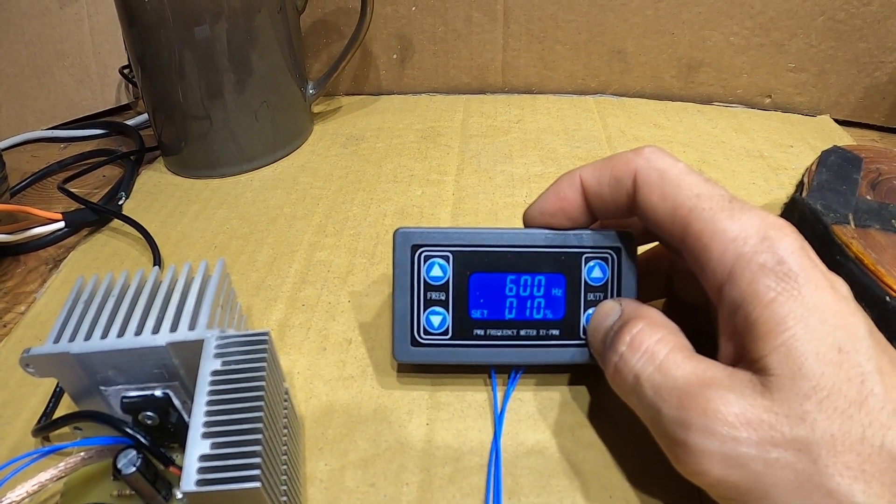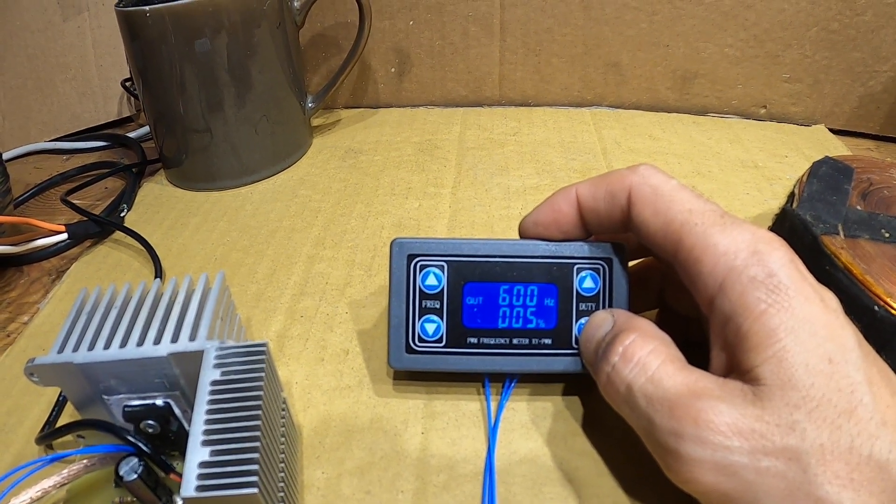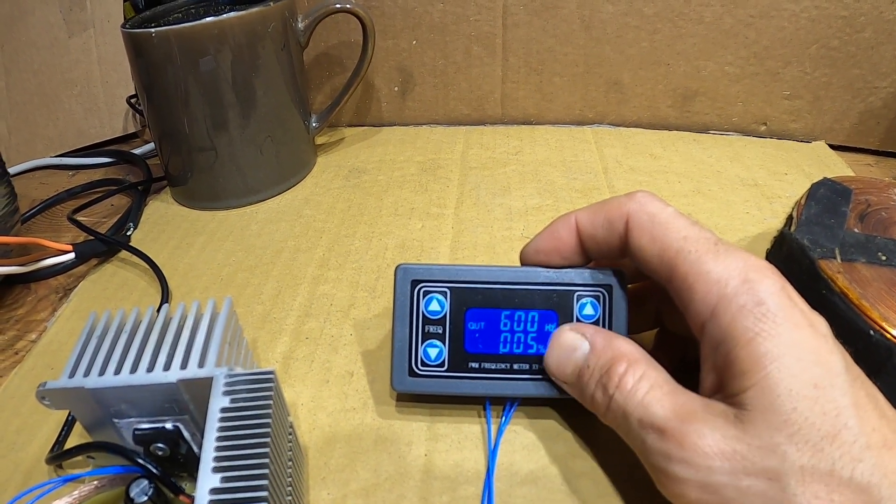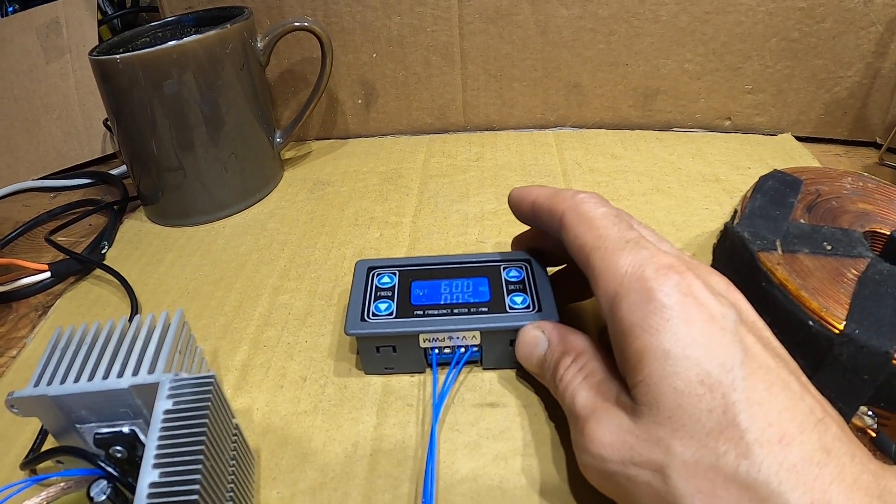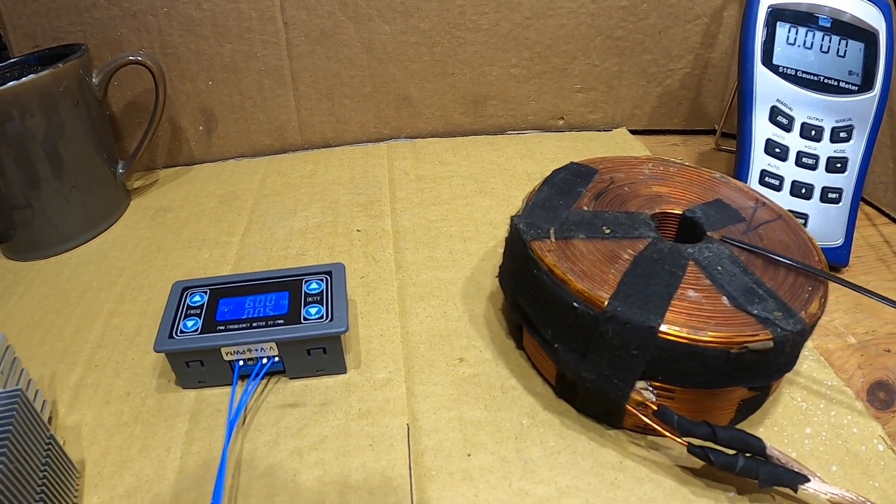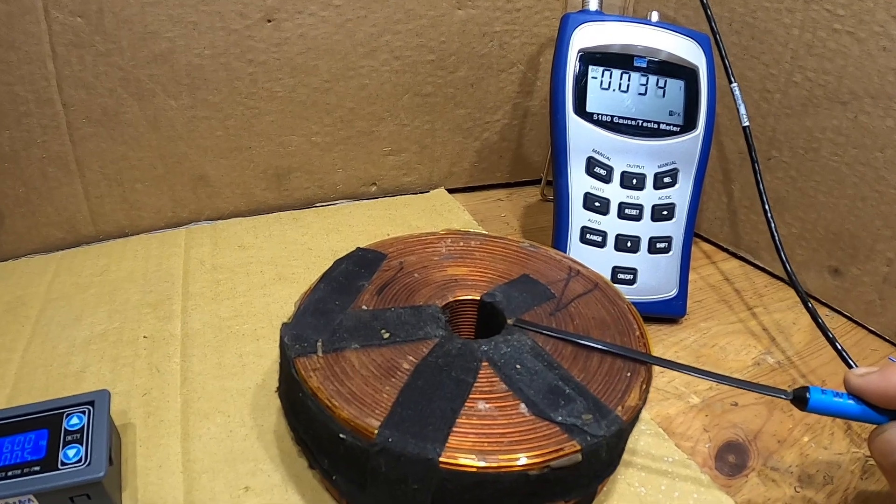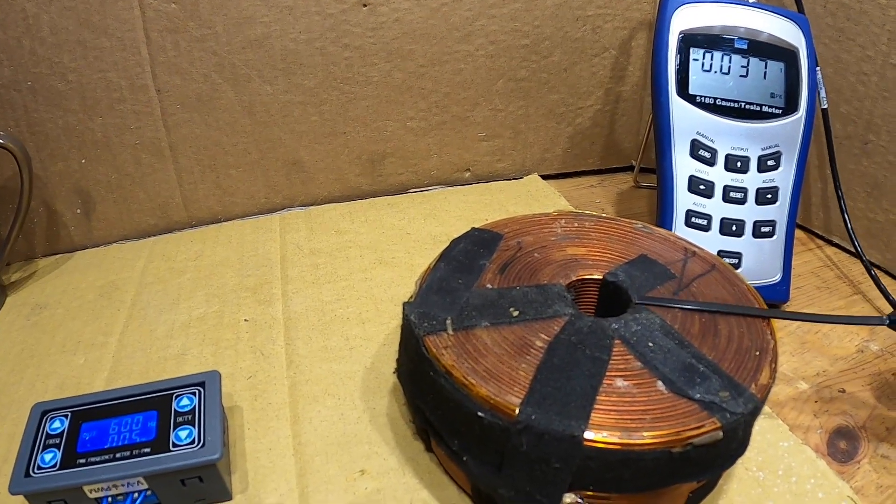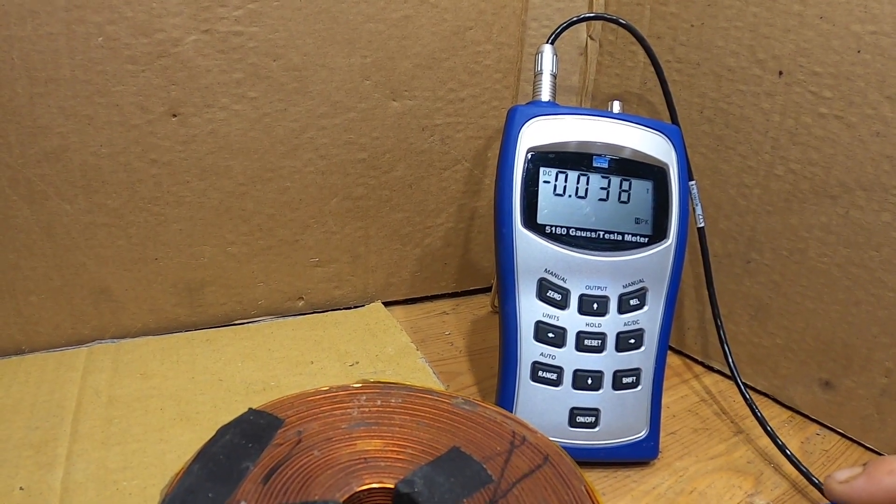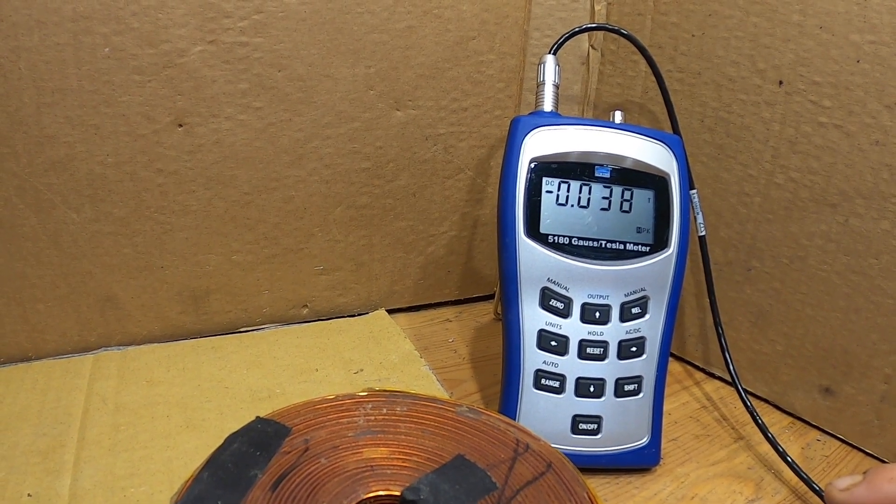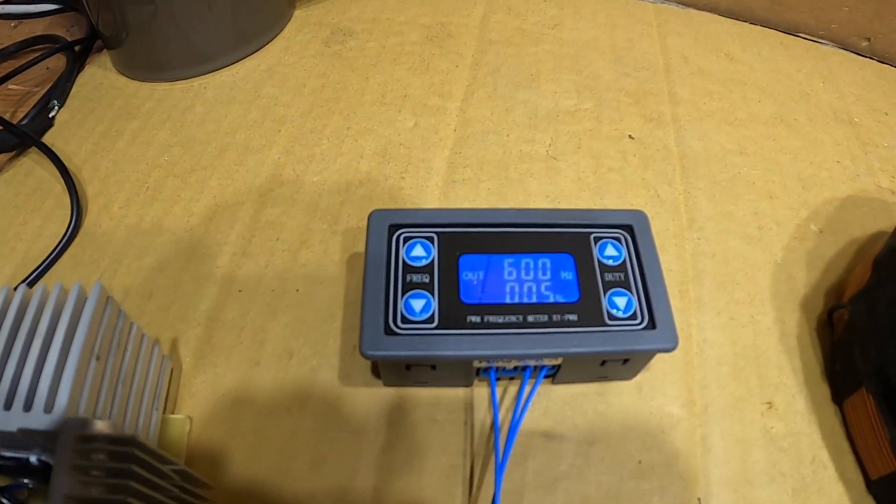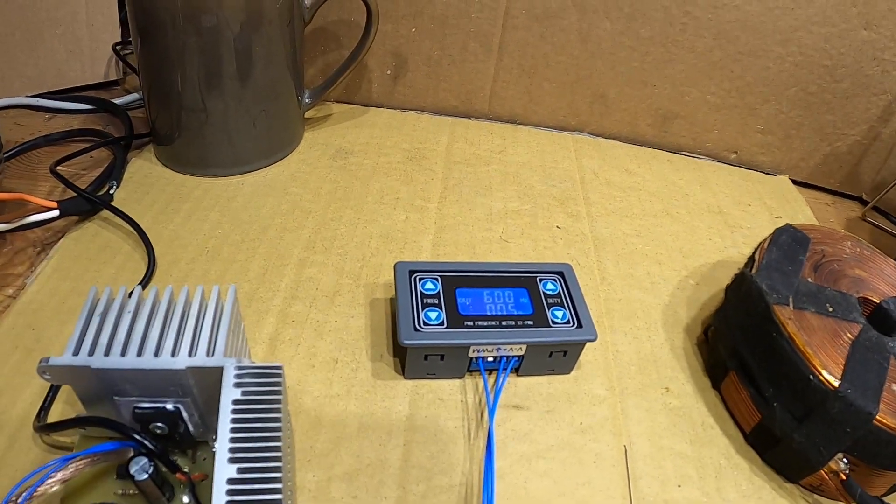So let's take a measurement with first 600 Hertz. Count three, one, two, three. Okay, one more time. One, two, three. 0.038, so 380 gauss coming out at five percent, 600 Hertz.